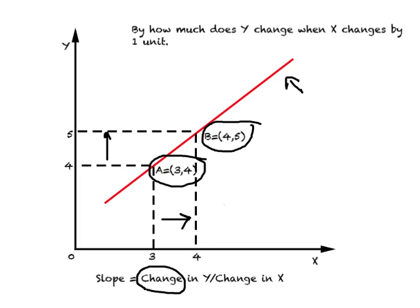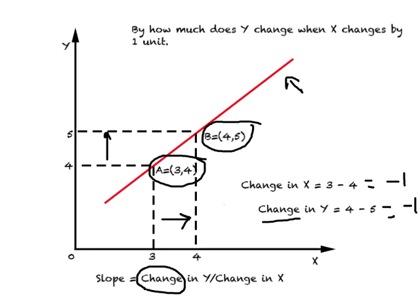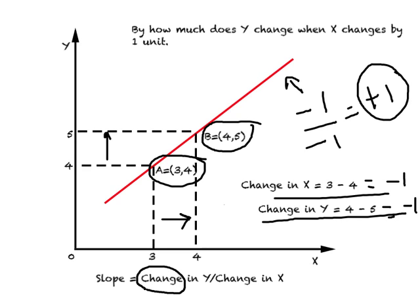Change in X is the difference in the value of X: it changes from 3 to 4, so 3 minus 4 equals negative one. Similarly, change in Y is 4 minus 5, which also equals negative one. So slope equals change in Y divided by change in X: negative one divided by negative one equals plus one.